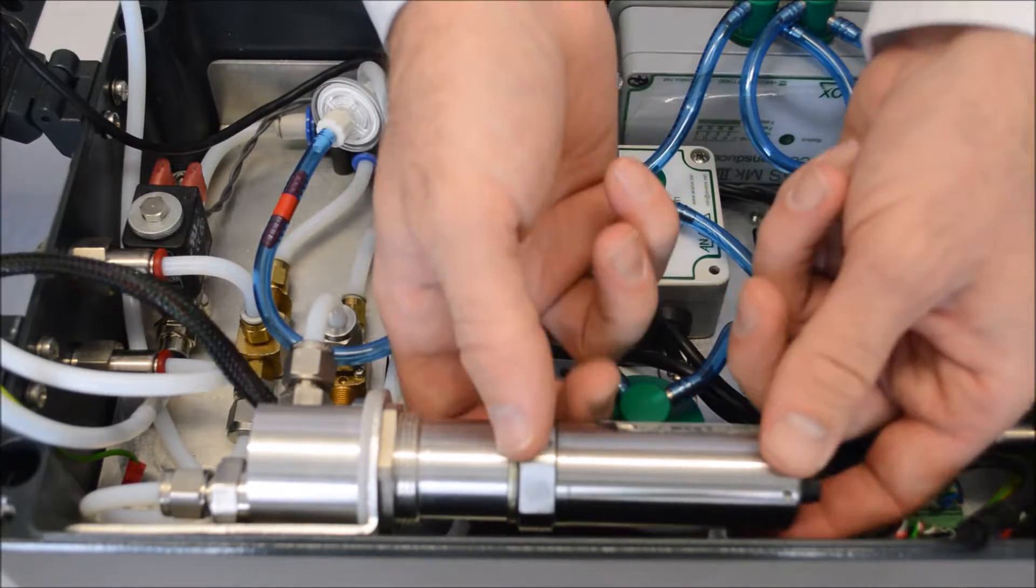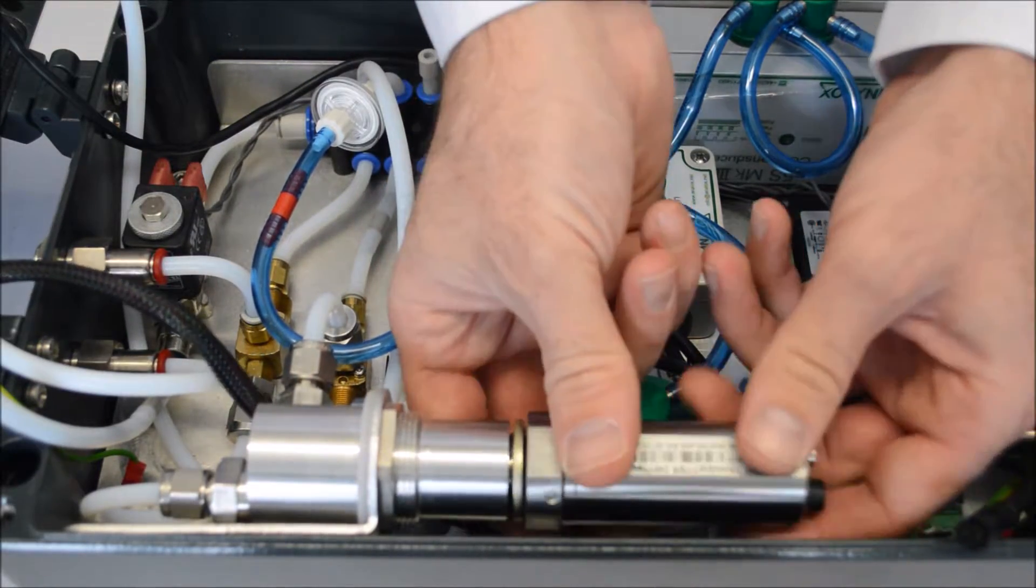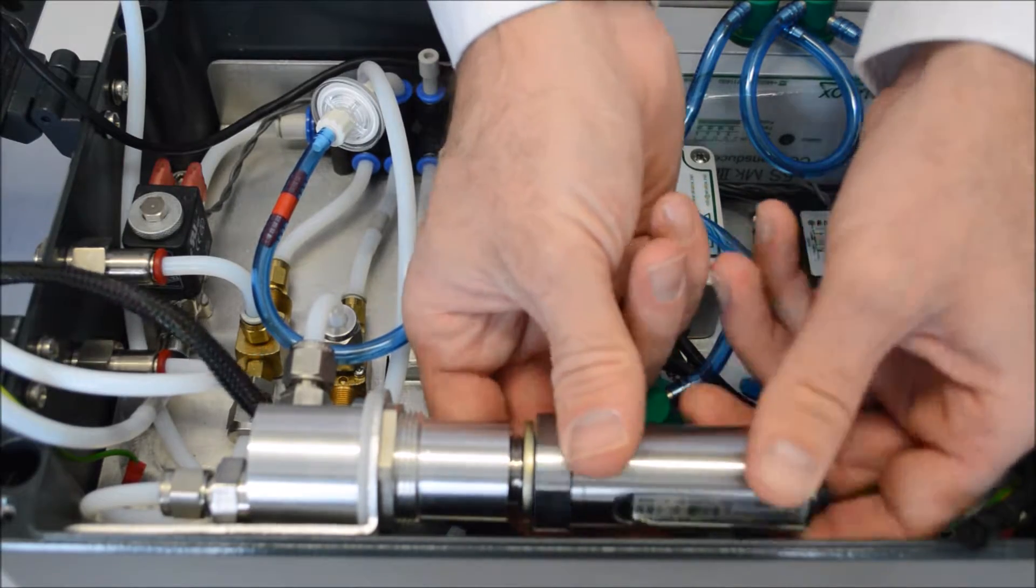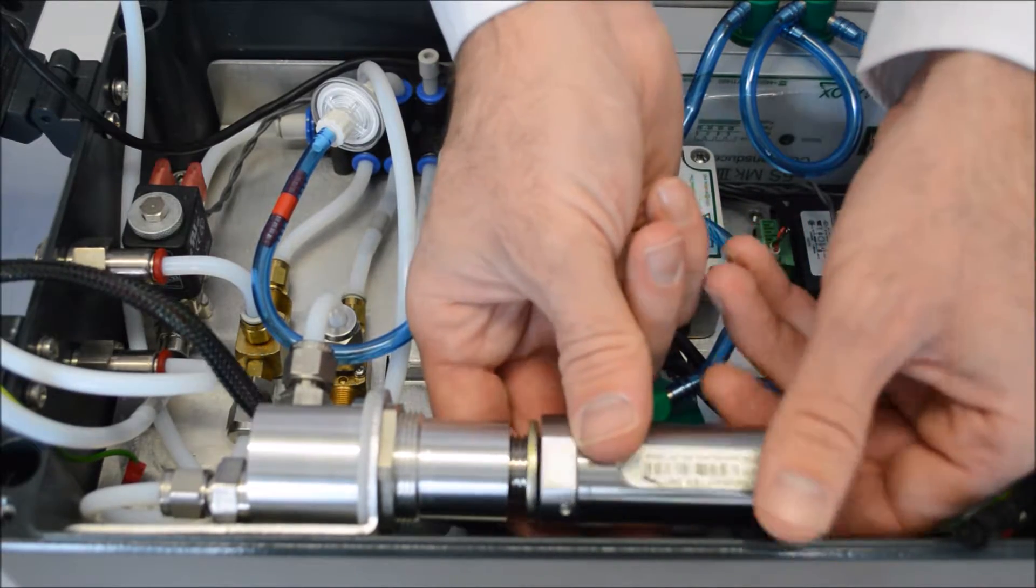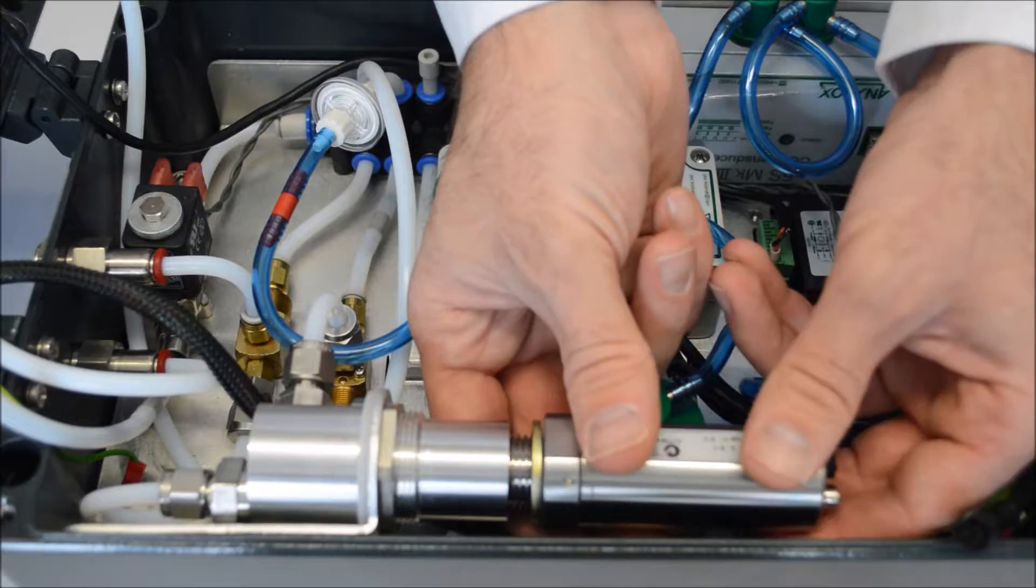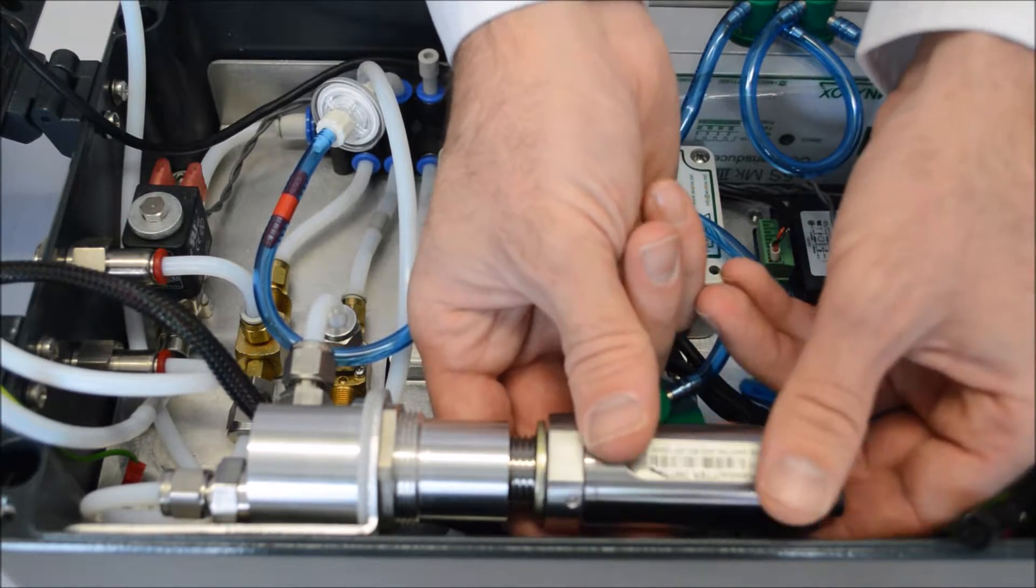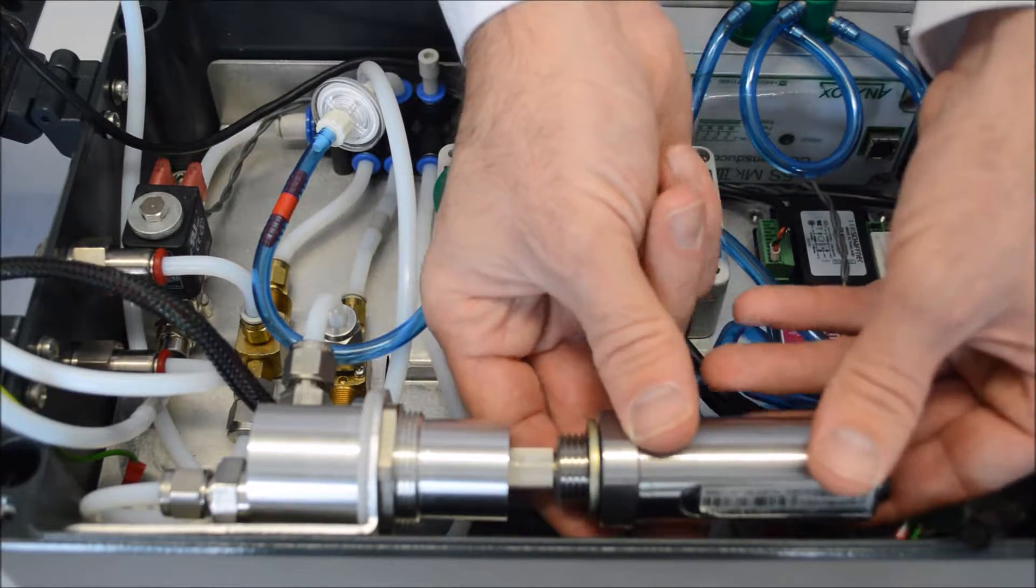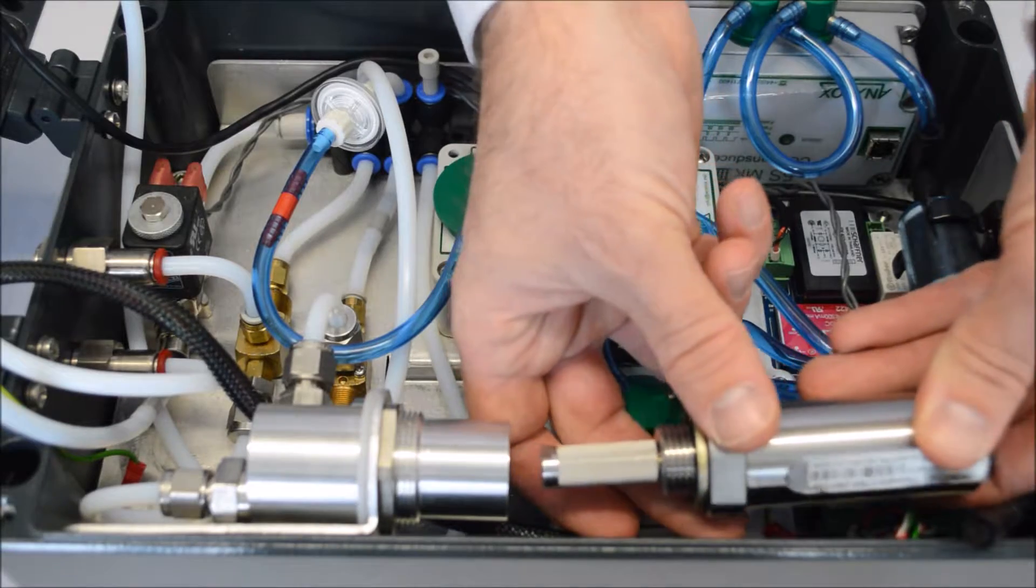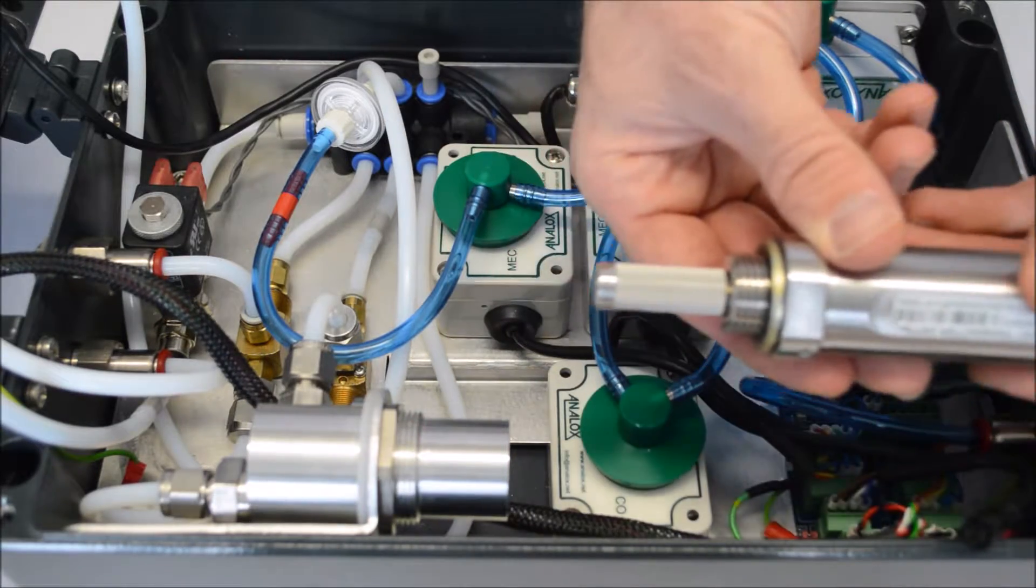Once you have initially started it turning, it will just come off with your hands. Take care when you are removing this because the sensor is very fragile. That is the dew point sensor now removed.